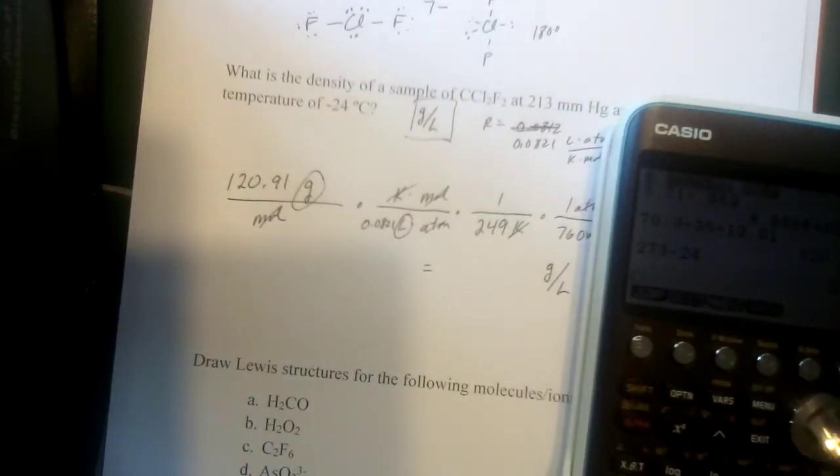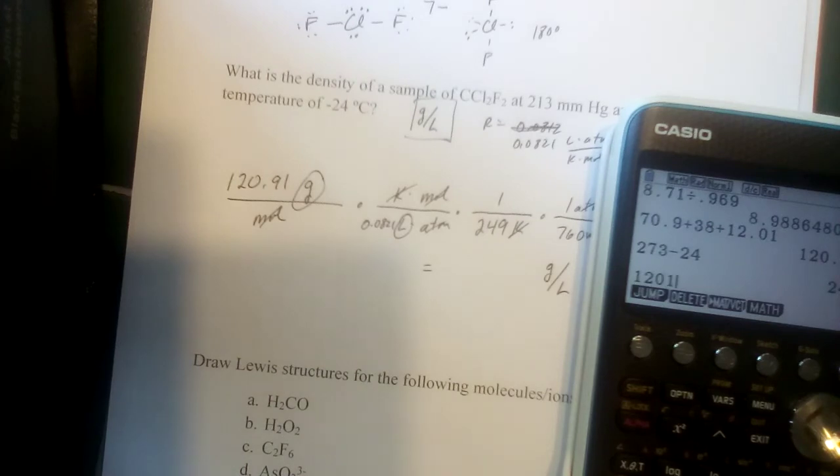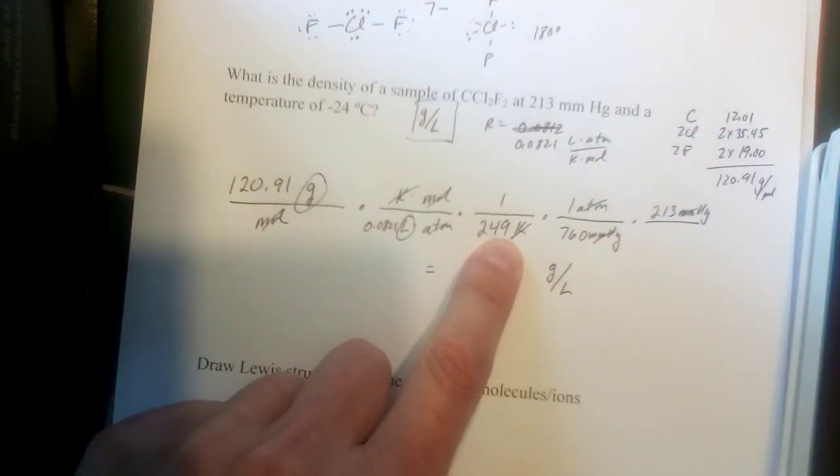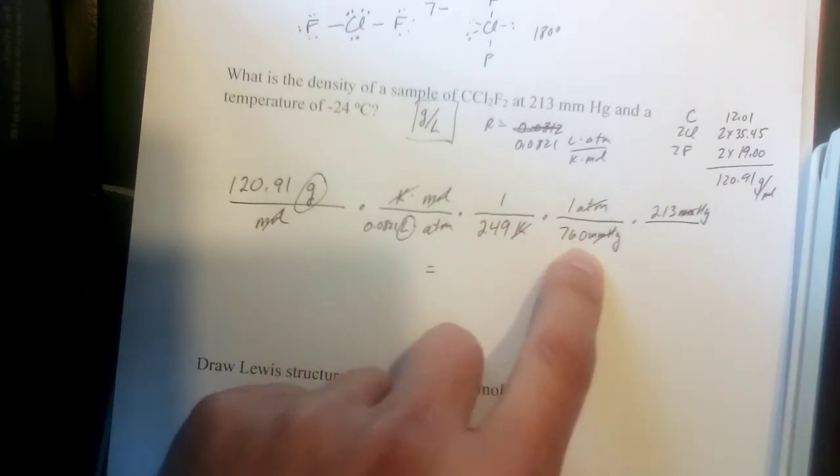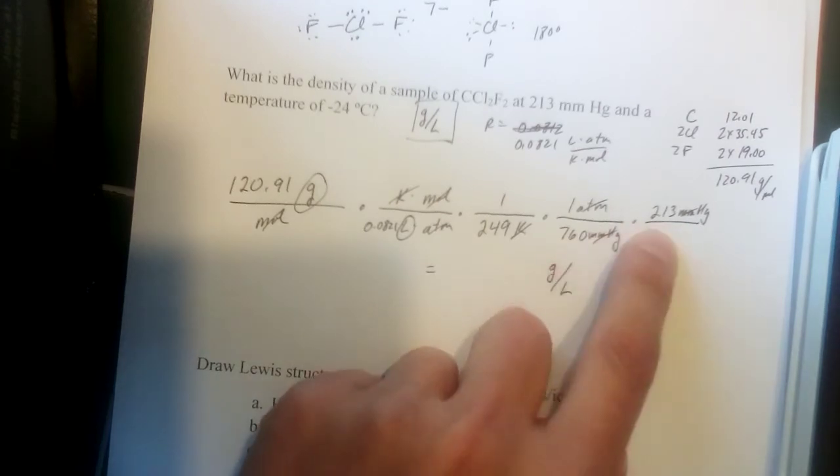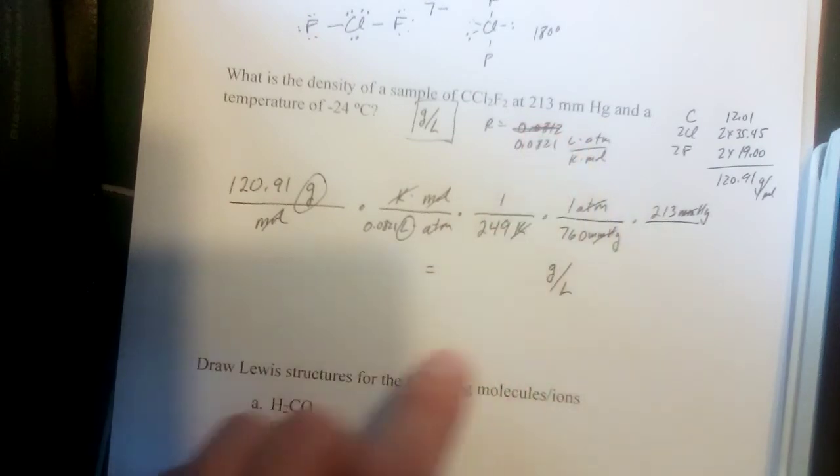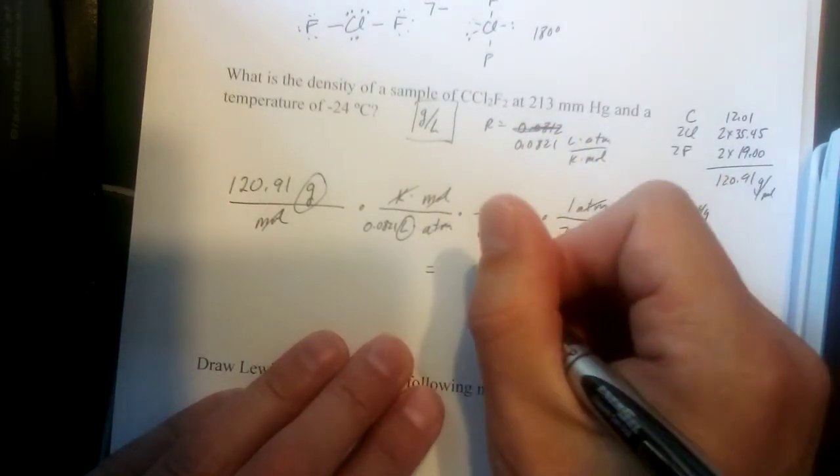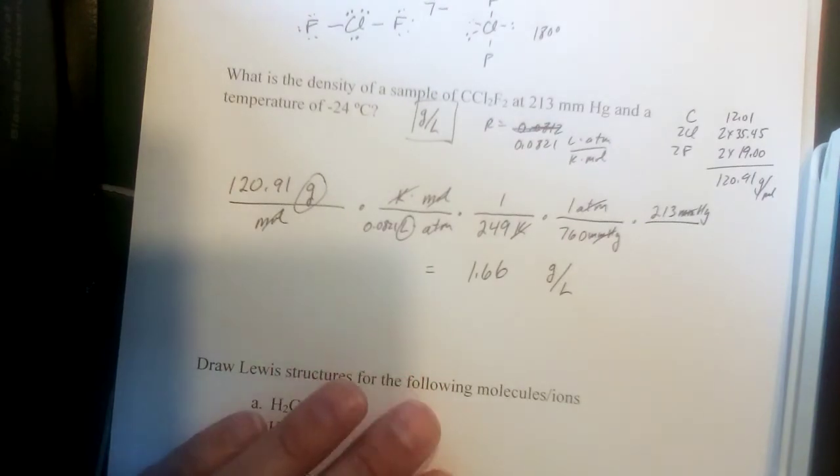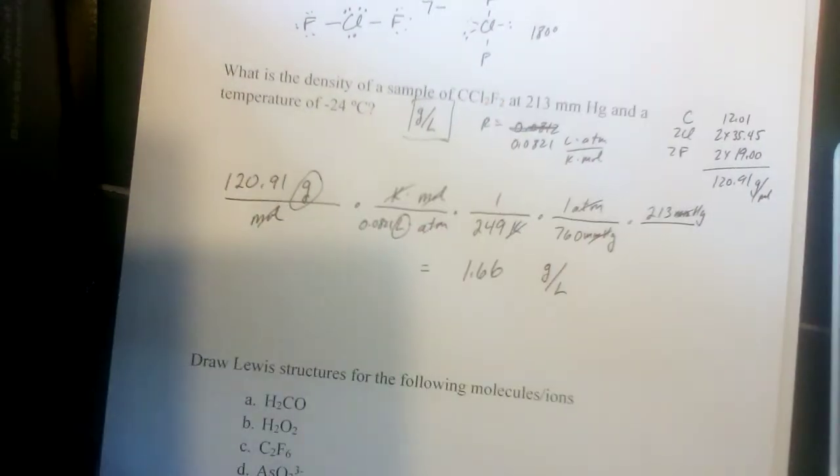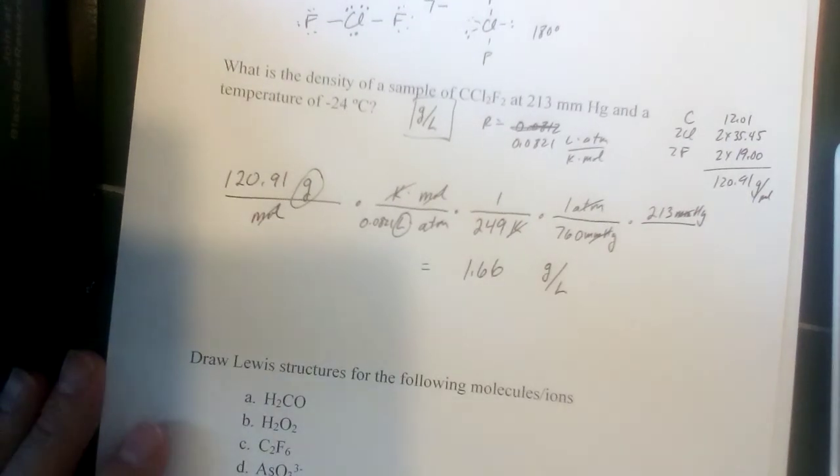Now I just need to plug these numbers in. So 120.91, hit the right buttons, would help too. 120.91 divided by 0.0821 divided by 249 Kelvin divided by 760 millimeters of mercury there. And then times 213 millimeters of mercury. And I get, looks like three significant figures pretty much is our limit. So 1.66 grams per liter would be the density of that gas under those conditions, that temperature and pressure.